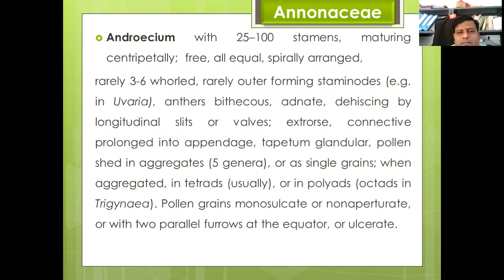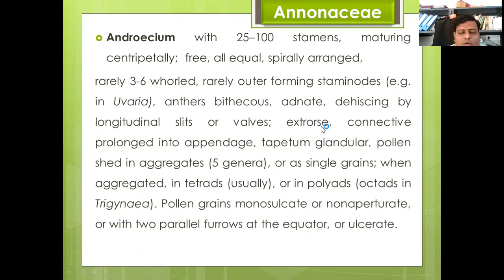Androecium: within this family there are 20 to 500 stamens, maturing centripetally, free, all equal, spirally arranged; rarely three to six whorled, rarely outer forming staminoids — for example in Uvaria species. Anthers are basifixed, dehiscing by longitudinal slit or wall; extrorse; connective prolonged into appendages; tapetum glandular; pollen shed in aggregates or single grains.